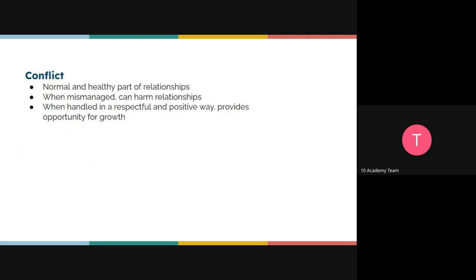Now, everyone wants to avoid conflict — no one likes addressing it. But we have to recognize that conflict is a normal and healthy part of relationships. There is no way two or more persons working together can always agree all the time. Conflicts will come up. What is most important is that we learn how to deal with them in a healthy way. It is not that conflict shouldn't come up at all — what we should look at is how it is being addressed when it does.